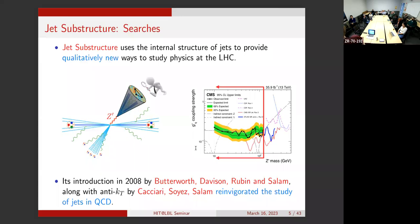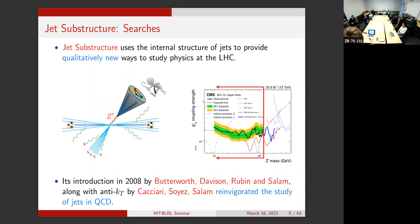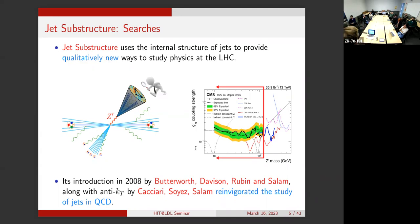You could imagine producing some new particle—say a Z prime—which decays into hadrons in your detector. If you're the experimentalist at infinity measuring patterns on your detector, there's no way from just measuring the angles or energies of jets to see anything. The only way this object imprints its existence is through subtle correlations in the patterns of energy flux. So you want to design observables to understand that there's some new particle hidden inside, and this reinvigorated the study of jets in QCD.